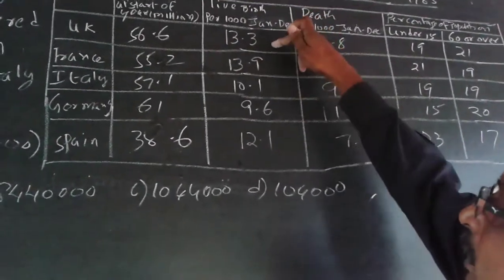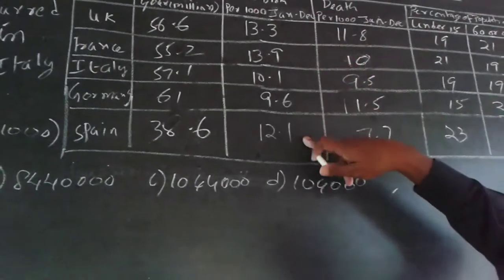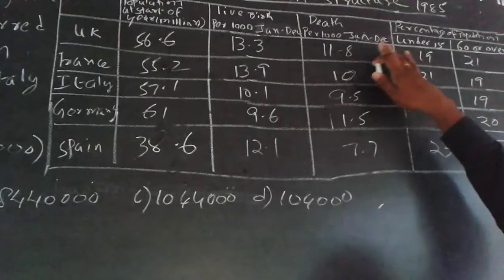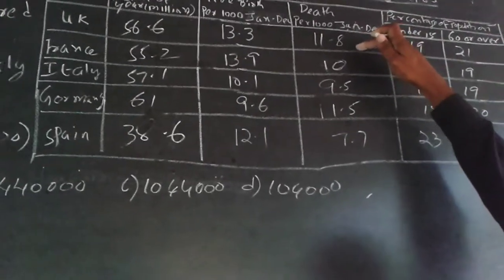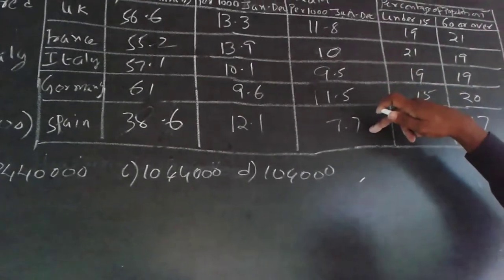Live births per thousand January to December: 13.3, 13.9, 10.1, 9.6, 12.1. Similarly, deaths per thousand January to December: 11.8, 10, 9.5, 11.5, 7.7 per thousand.